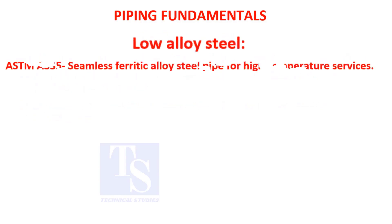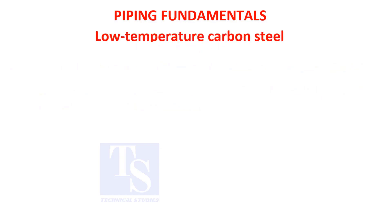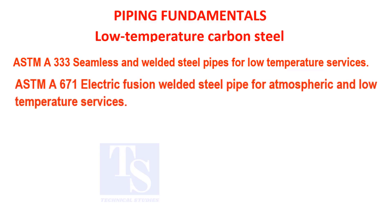Low alloy steel — ASTM A-335: seamless ferritic alloy steel pipe for high temperature services. ASTM A-691: carbon and alloy steel pipe, electric fusion welded, for high pressure service at high temperature. Low temperature carbon steel — ASTM A-333: seamless and welded steel pipe for low temperature services. ASTM A-671: electric fusion welded steel pipe for atmospheric and low temperature services; available sizes are larger than 16 inches.